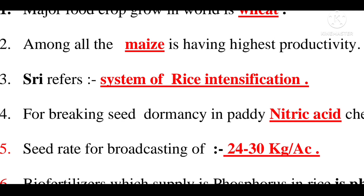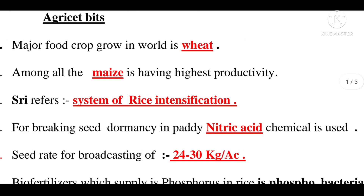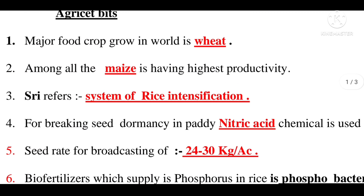For breaking seed dormancy, a chemical is used. Regarding seed rate for broadcasting: rice seed rate is 24 to 30 kg per acre.